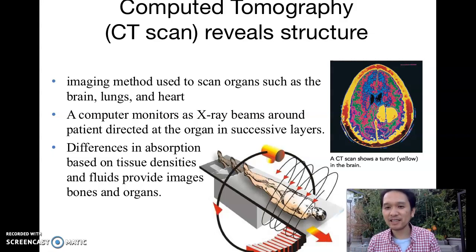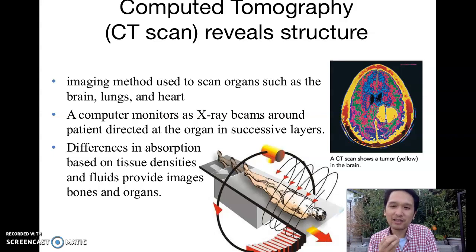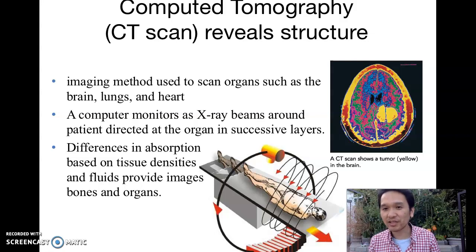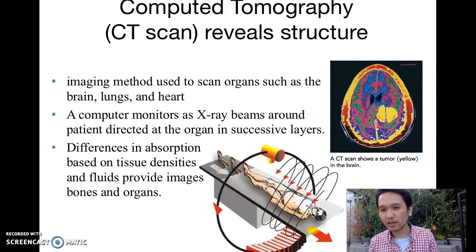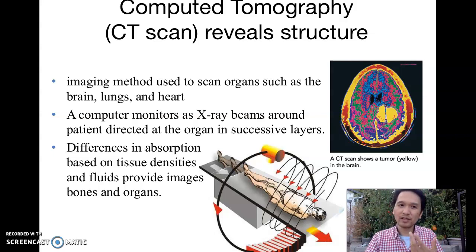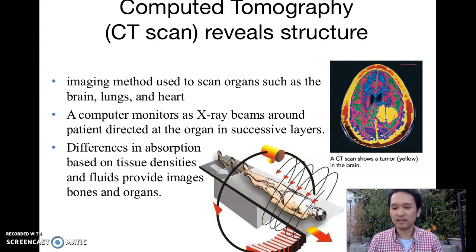For example, here is a CT scan that shows a tumor. It turns out a tumor is quite dense, so it is different from your other cells, organs, and fluid regions. So in this patient, unfortunately, there is a tumor in the brain — and using the CT scan and x-rays, we can see that.